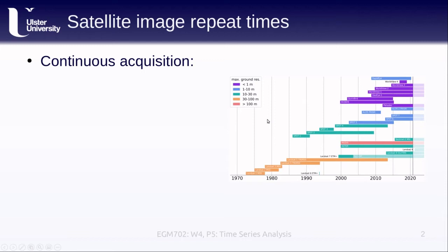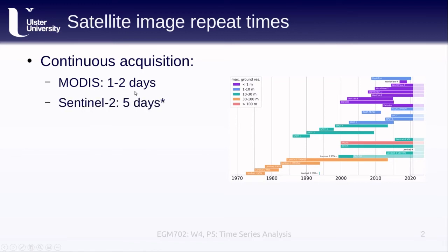We can look at the repeat times for those acquisitions. For example, the MODIS sensor is carried on two different satellites — the Terra and Aqua satellites — and it has a repeat acquisition time of every one to two days. Sentinel-2's MSI instrument is carried on two different satellites and has a repeat time of ten days, which because there are two satellites in opposing orbits gives us an image every five days.